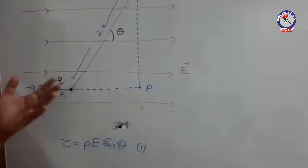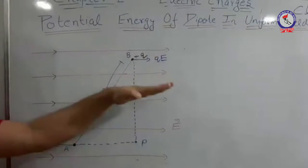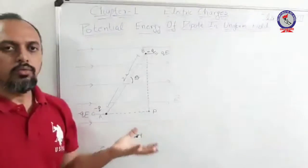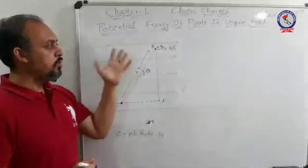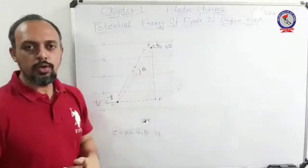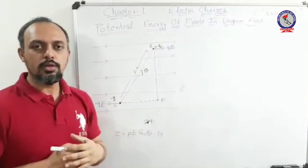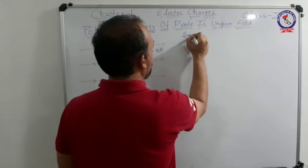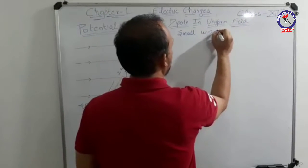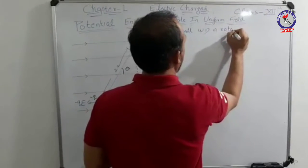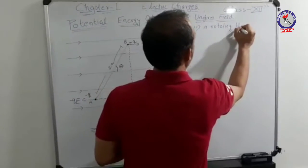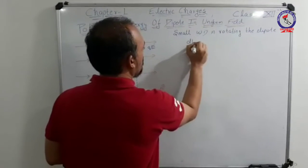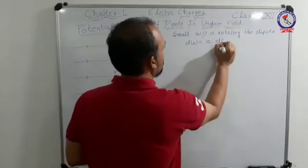Let this be equation number 1. Now, in order to rotate this dipole in this uniform field, we need to apply some force — or you can say, we need to do some work on the dipole if we need to rotate it in the given field. Therefore, a small amount of work is done in rotating the dipole. Small work done in rotating the dipole: dW equals torque dθ.